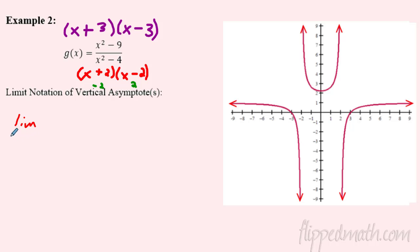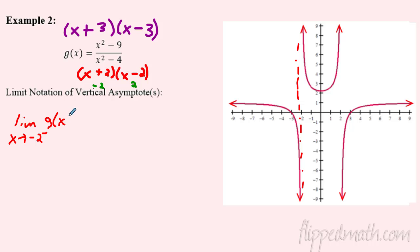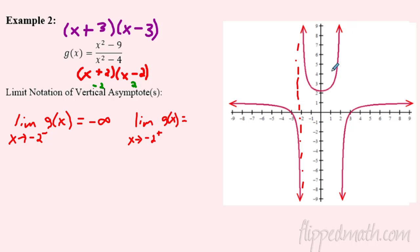Now let's write the limit notation. Starting with the asymptote at x = negative 2: the limit of g(x) as I approach negative 2 from the left goes down to negative infinity. Then the limit of g(x) as I approach negative 2 from the right goes up to positive infinity. That takes care of the first vertical asymptote.